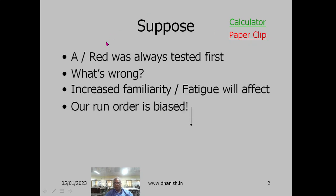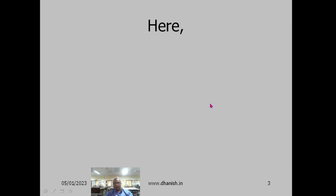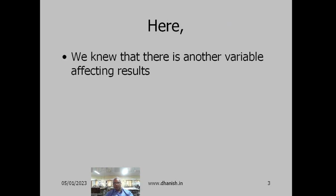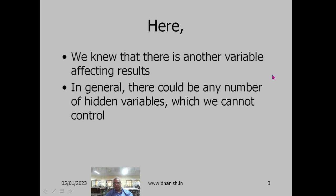If you always do A first, then that run order — the order in which you do the experiment — is called a biased run order. There could be any number of hidden variables. Here we mentioned familiarity with the numbers and fatigue.